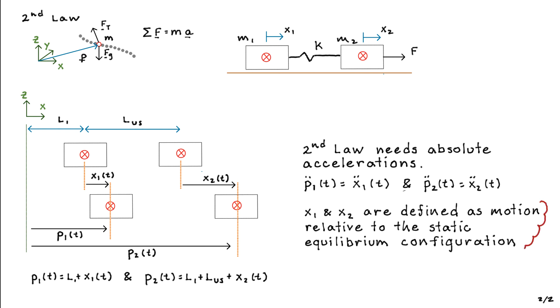So in summary, x1 and x2 are defined as the motion relative to the static equilibrium configuration. That's really important because if you were doing analysis and you needed to know the absolute position of these two blocks, you could certainly use x1 and x2 in the equations that we derived on the previous page. But to write the absolute positions, you would need to add to those x1 and x2 quantities for all time L1 and L1 plus LUS respectively.